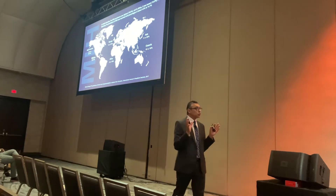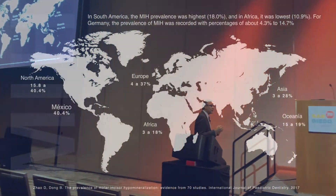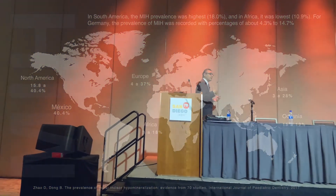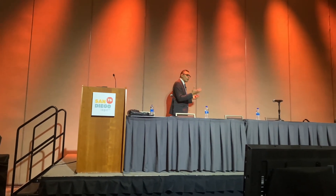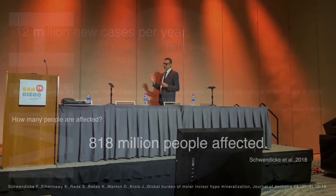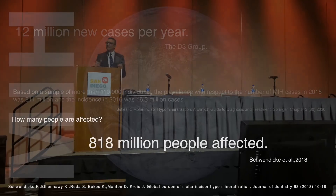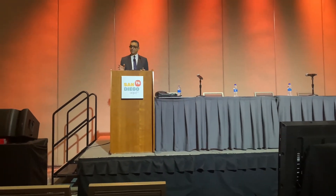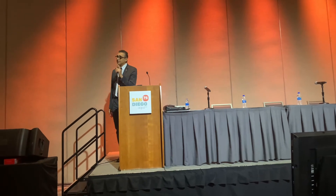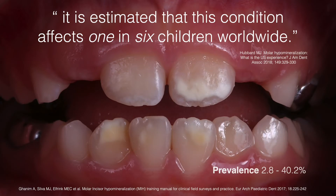With a prevalence from 2 to 40 percent, depending on the research. So far, we can say that in most studies, in most countries, it's present. It's not a problem only of high-income countries — we can find MIH in Mexico, in Africa, everywhere. It is a wide and general problem, with a prevalence around 14 percent — 12 million new cases per year. Several hundred million people are affected by MIH, which makes it a potential public health problem, especially when it affects the quality of life of children and adolescents. At least one in six children is affected by MIH.